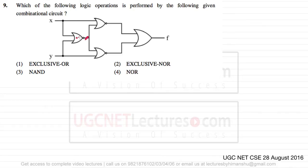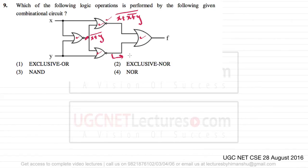This is a NOR gate — sorry, not a NAND gate — this is a NOR gate, this is a NOR gate, this is a NOR gate, and this is an OR gate. The output of this first NOR gate will be (X + Y)', and the output of this second NOR gate will be (X + (X + Y)')'.